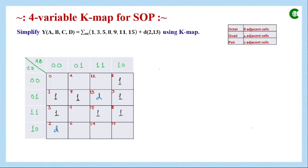Next we group adjacent cells. We first check for an octet, but there are no eight adjacent cells, so an octet is not possible. When simplifying using min terms, don't care terms — though we don't know their real value — are treated as 1 in the K-map. They help form groups, but we cannot form a group using only don't care terms; there must be at least one actual 1.